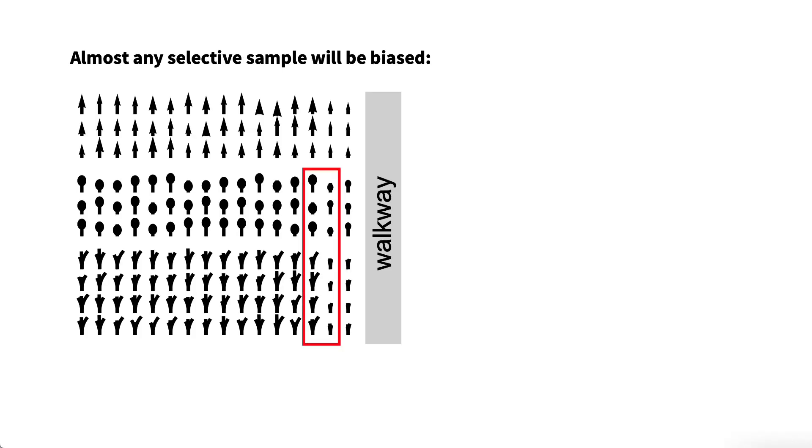Almost any sample that is drawn selectively from some part of the garden will be biased in some way where the proportion of some types or sizes of plants or some soil or other conditions in the population will not be the same as the corresponding proportions in the sample.